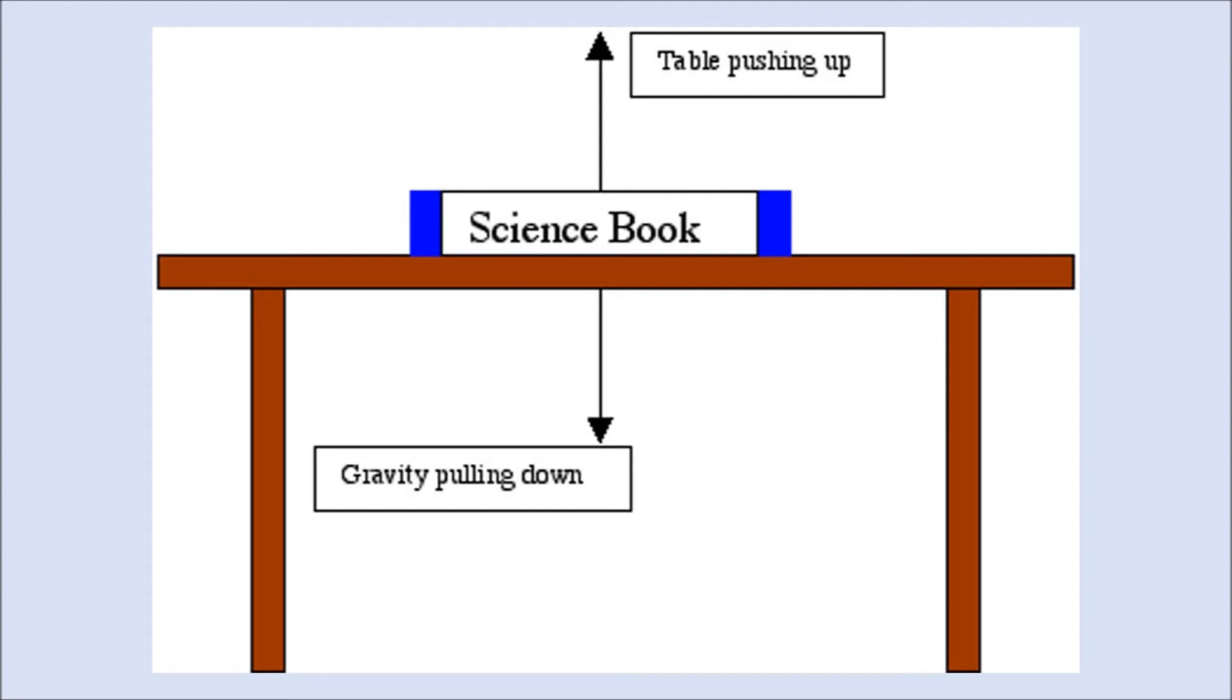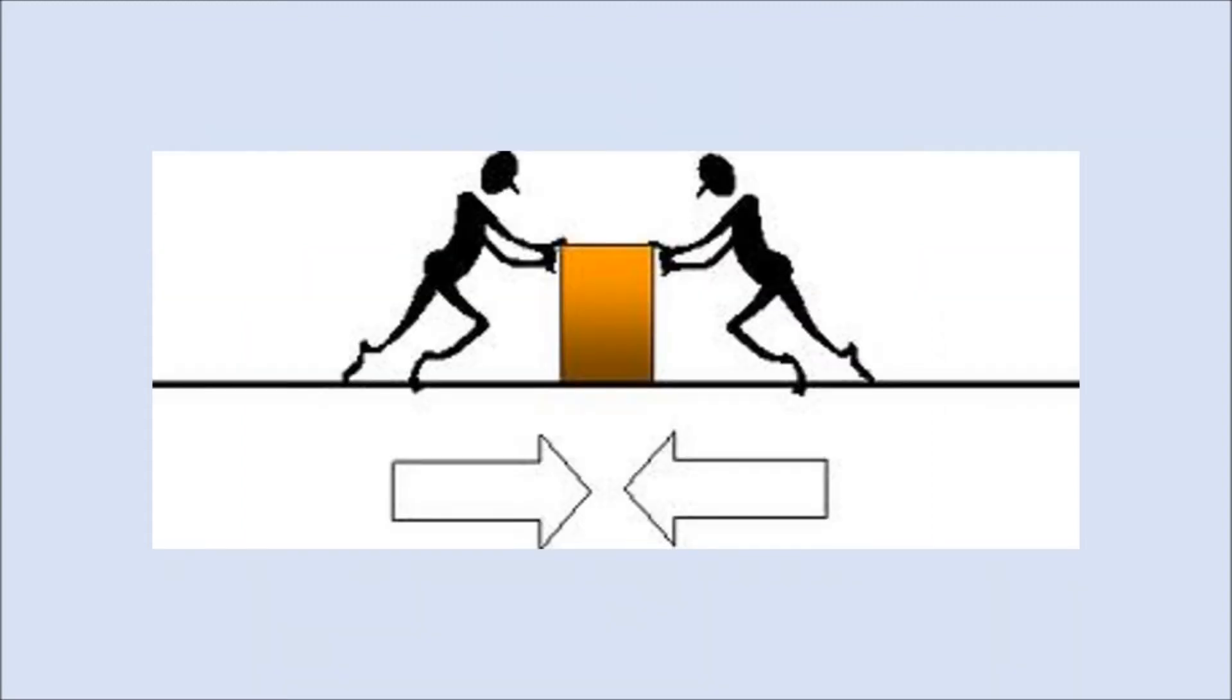You have gravity pulling down, the table pushing up, and the book is at rest. The forces up and down are equal, therefore static equilibrium. Here's another example where both persons are pushing on a crate with the same force, and you have static equilibrium.